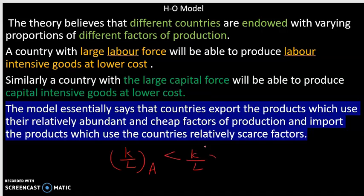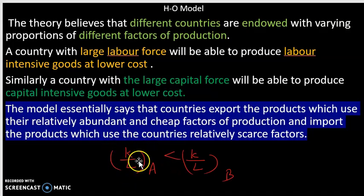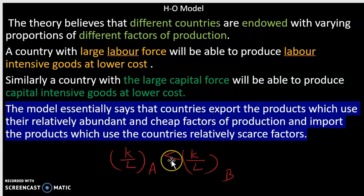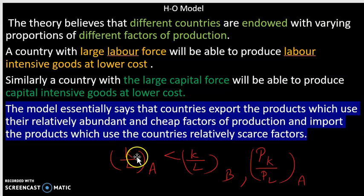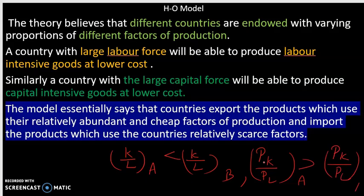Country A is a labor-intensive country and country B is a capital-intensive country. In terms of the K by L ratio, the K by L of country A is less than the K by L of country B, because the K value is less in country A. Therefore, the price ratio Pk by PL of country A is greater than the Pk by PL of country B, which can be presented symbolically.